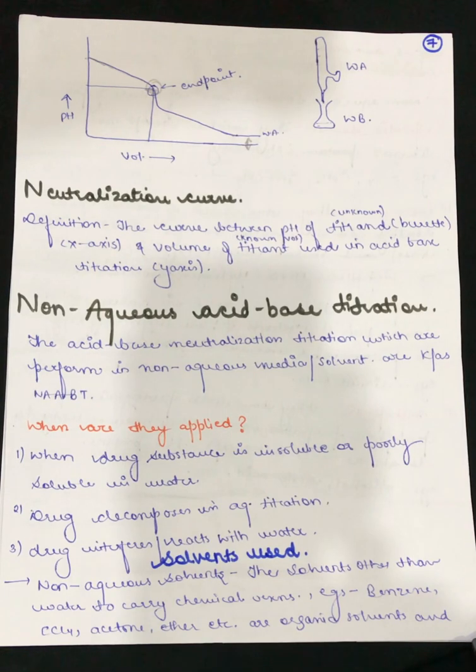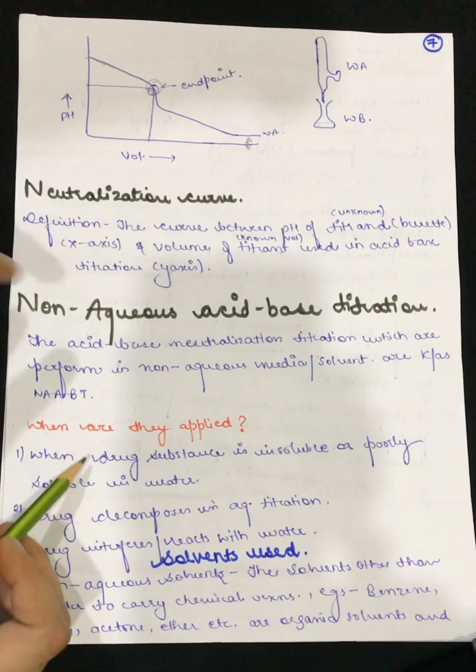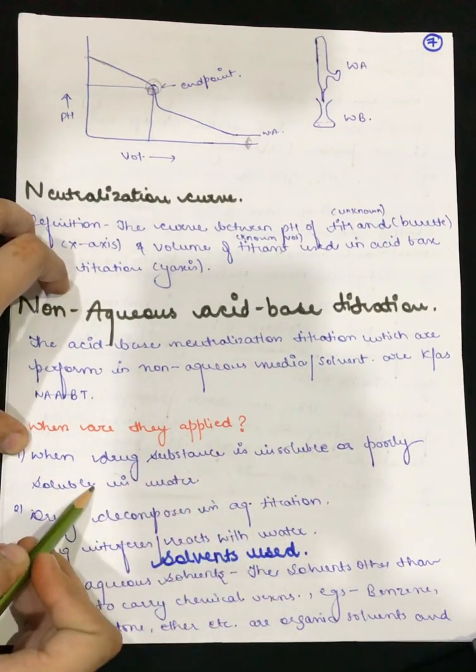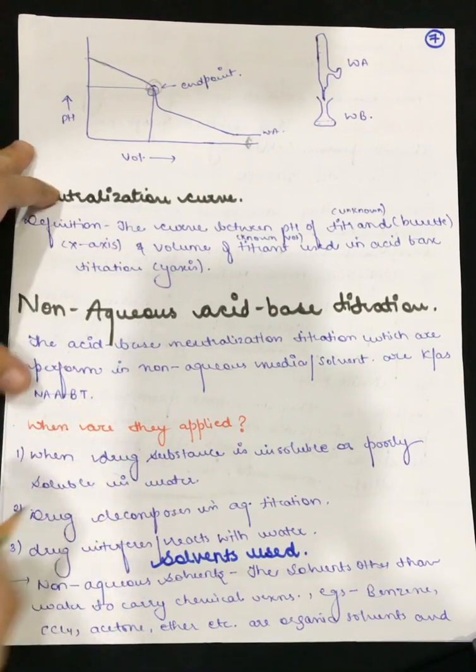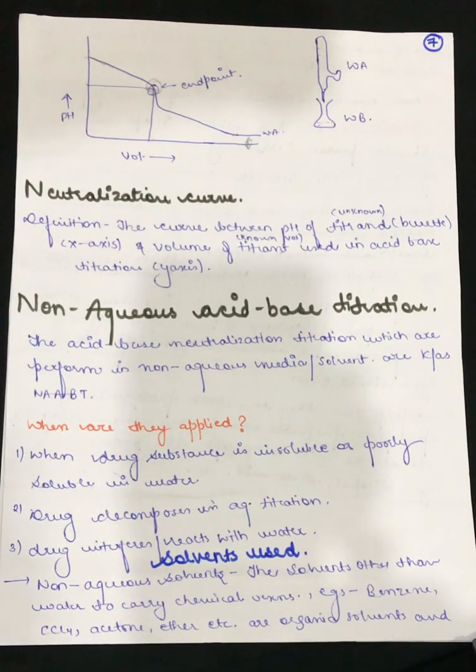Now let's see the conditions where we will be applying non-aqueous acid-base titration. When the drug substance is insoluble or poorly soluble in water, we will be applying non-aqueous acid-base titration. If our drug substance is poorly soluble in water or partially soluble or insoluble,